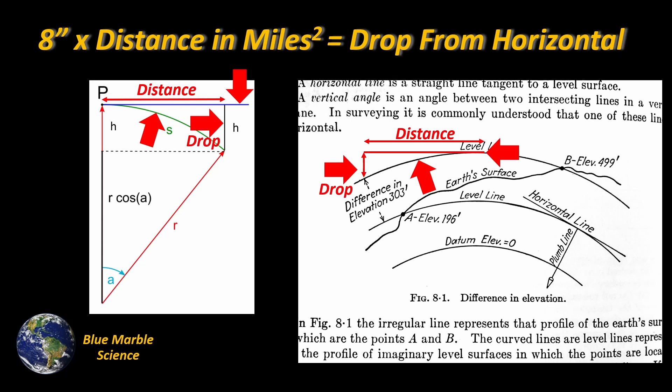Instead of a lot of words, let's write an equation. H is equal to 8d squared. So h, the drop, is equal to 8 times the distance in miles squared. That's very simple — in fact, it's not going to get any easier than that.